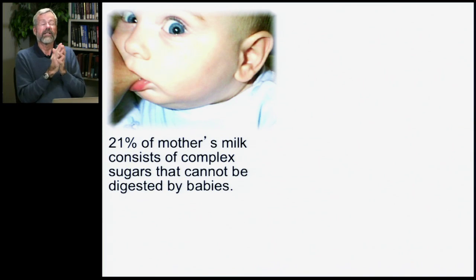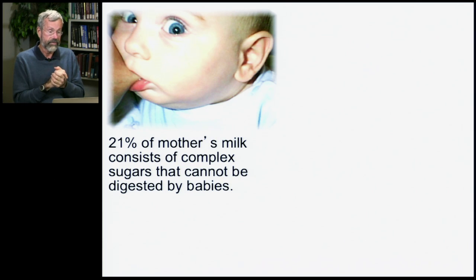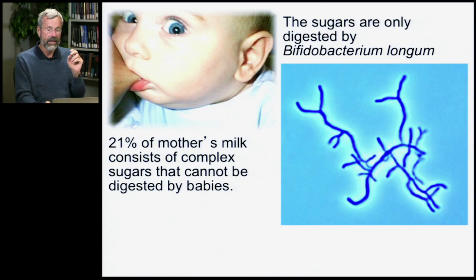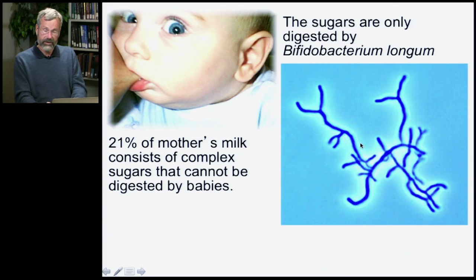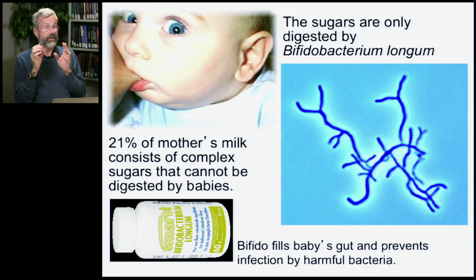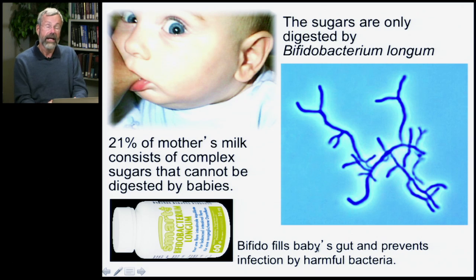Mother's milk, you'd think, is perfectly evolved to help the digestion of her baby, since that's all it will eat for its first few months of life. But one puzzle is that 21% of a mother's milk consists of complex sugars that babies are unable to digest themselves — they don't have the enzymes. It turns out that in the baby's gut, there is bifidobacterium longum, and these sugars can be digested by bifido. So by feeding the baby sugars it cannot digest, the mother is nurturing a very healthy bacterial flora inside her child's gut, and this healthful bacteria prevents infection by much more harmful bacteria.